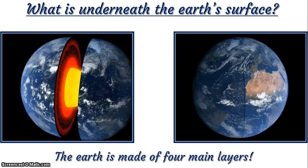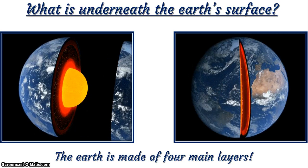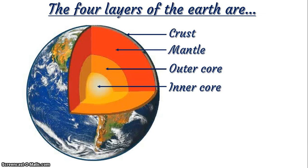The four main layers are: one, the crust; two, the mantle; three, the outer core; and four, the inner core. Let's repeat them: the crust, the mantle, the outer core, and the inner core.